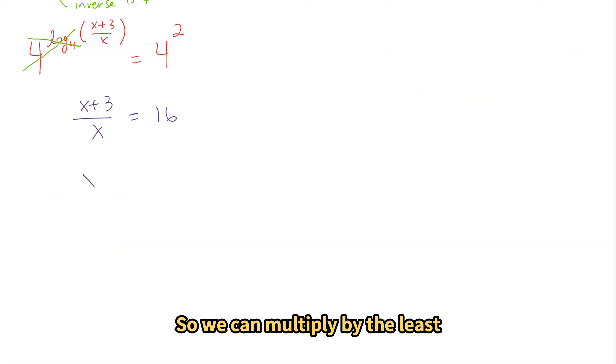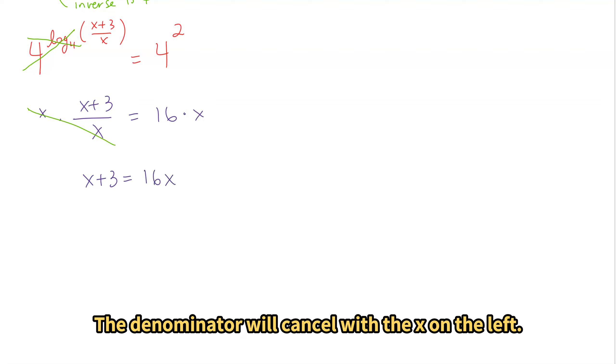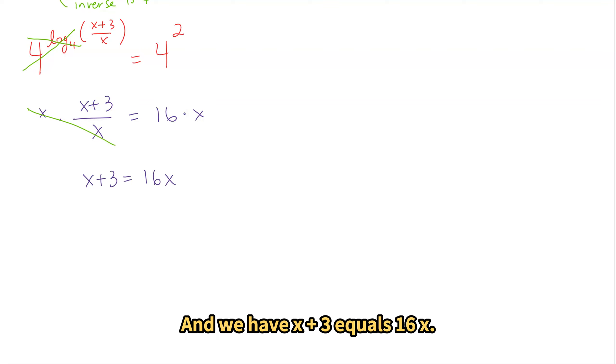So we can multiply by the least common denominator of x. The denominator will cancel with the x on the left. And we have x plus 3 equals 16x. We want to get the x's on the same side. 3 equals 15x.